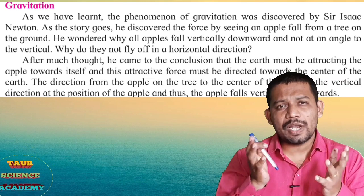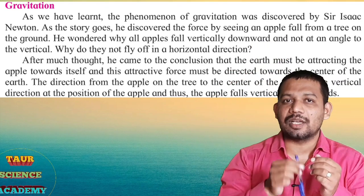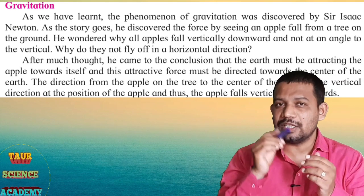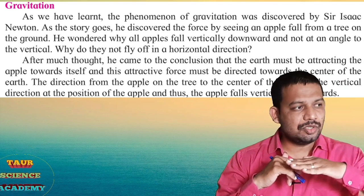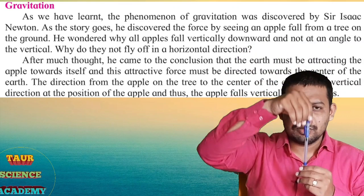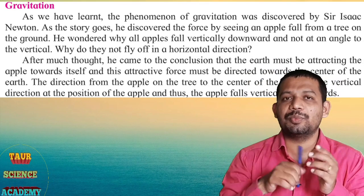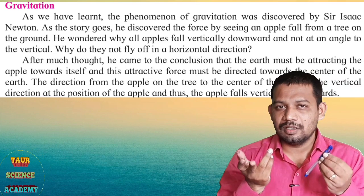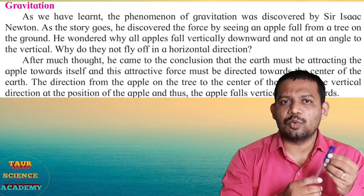He wondered: why do all apples fall vertically downward — straight down along the vertical — and not at any other angle? Why do they not fly off horizontally? Why do they not go sideways? Every apple falls straight down, perpendicular to the earth's surface — vertically downward.